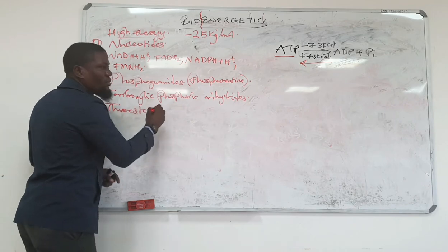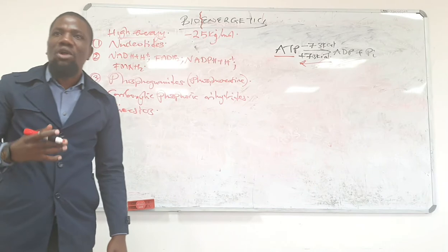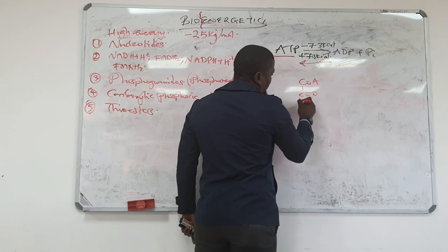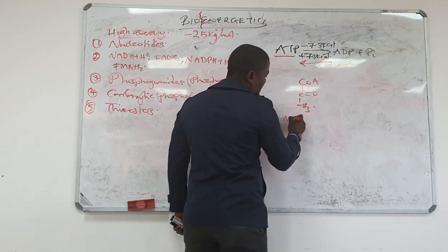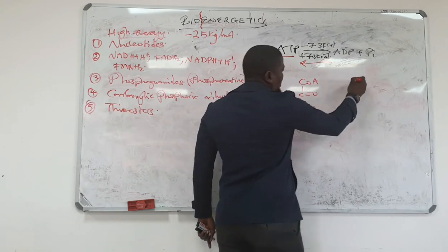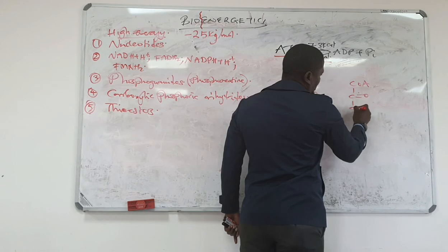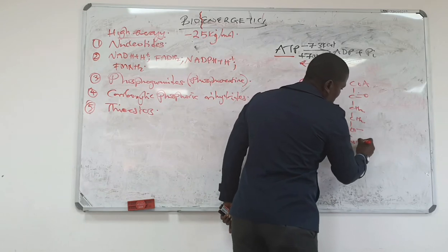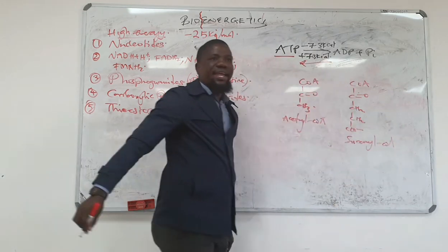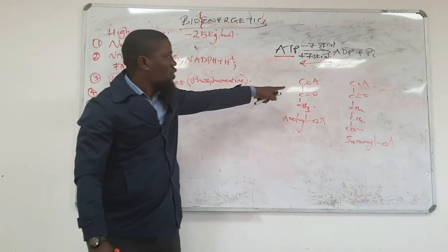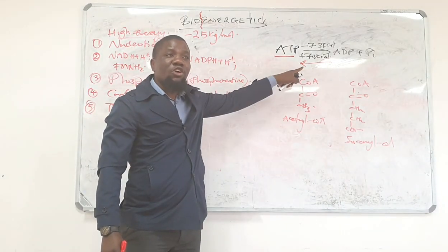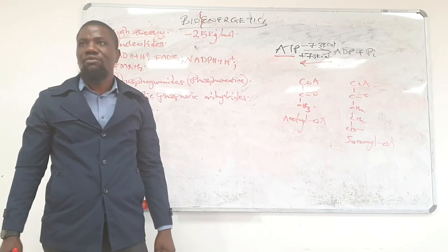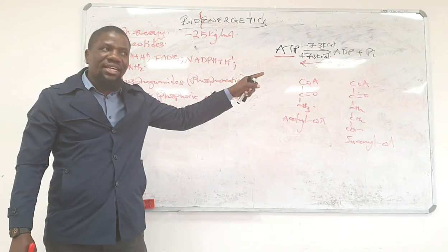Thioesters will be molecules that will have high energy. When you see a thioester, such as acetyl-CoA, these molecules will have high energy because of the CoA that is there. As the CoA is coming off, it will give off energy. For you to put back a CoA, you need to look for energy. So thioesters have high energy.